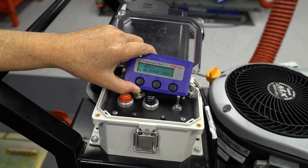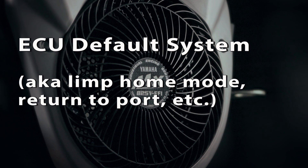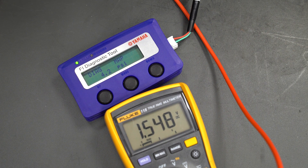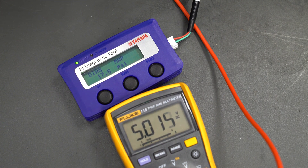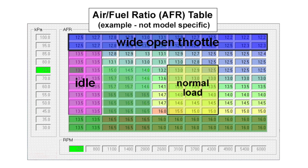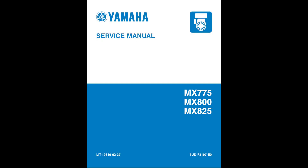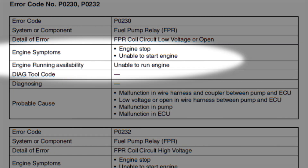The ECU will use a default setting for most failures to allow the equipment to continue to operate if at all possible. For example, if the MAP sensor fails while the engine is running, the ECU will set the atmospheric pressure to over 17 psi — this is below sea level. This makes the error calculation very high, so the ECU will make the fuel rich to maintain the target air-fuel ratio. This setting might result in poor engine starting and poor drivability. There are some faults when the engine will not run; the service manual will list the running ability for all error codes.